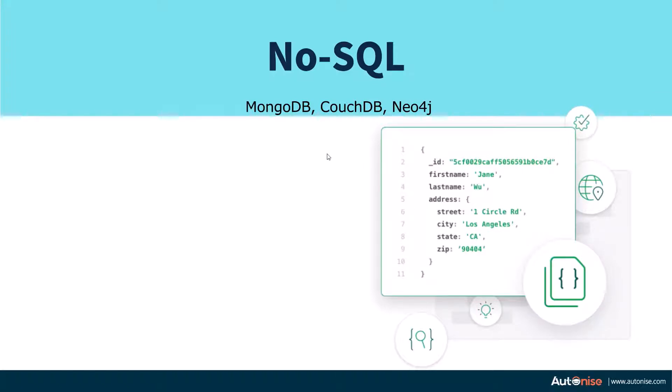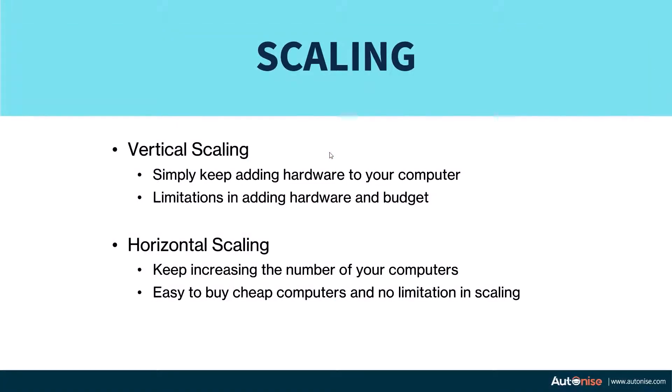Now let's look at scaling. There are two kinds of scaling: vertical scaling and horizontal scaling. In vertical scaling, we simply keep on adding new hardware to your computer — for example, upgrading from 8 GB RAM to 16 GB or 64 GB. However, there is always a limit: if your motherboard only supports 64 GB RAM you can't extend beyond it, and if you require 2 TB RAM you can't implement it in a single computer.